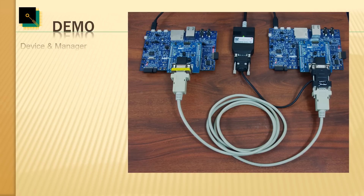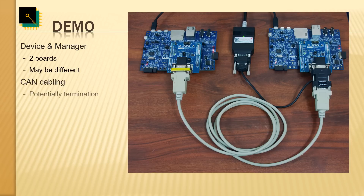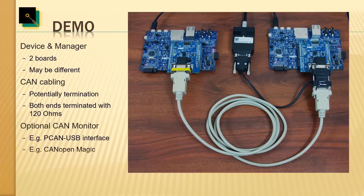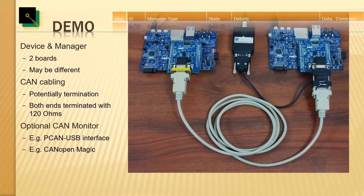To run the demos you need two boards: one programmed with the Device Library and one with the Manager Library. To connect the boards you need appropriate CAN cabling and potentially termination resistors — CAN specifies 120-ohm termination resistors at each end of the bus. An optional CAN monitor or analyzer is very helpful to see what is happening on the network; for that you need an additional CAN interface and monitoring software. We recommend the PEAK USB interface from PEAK System and our own CANopen Magic monitoring software.